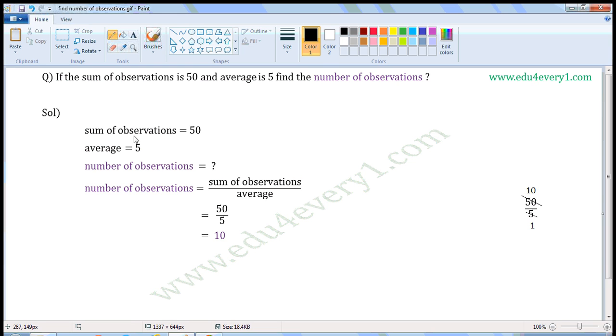Given sum of observations is equal to 50, average is equal to 5, we have to find the number of observations.